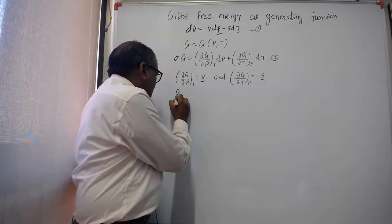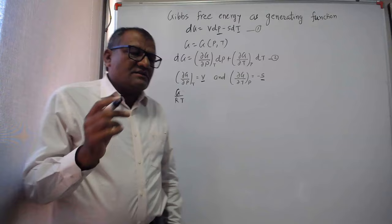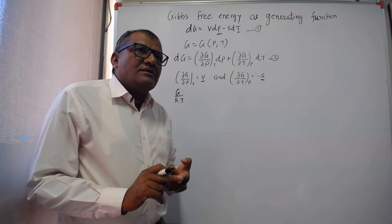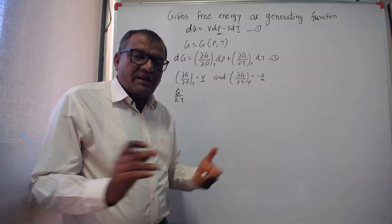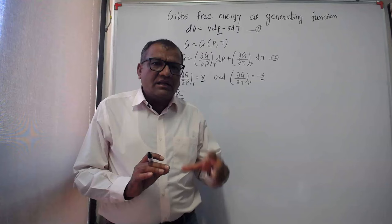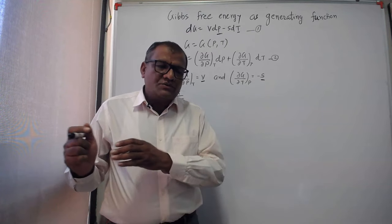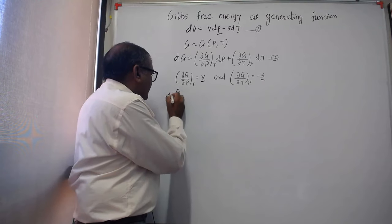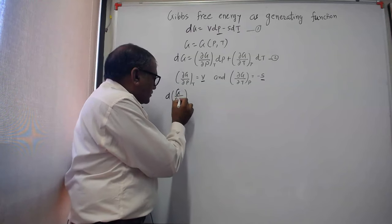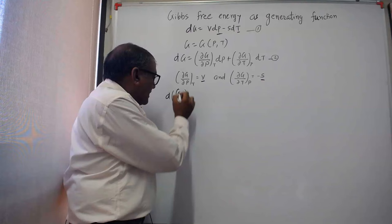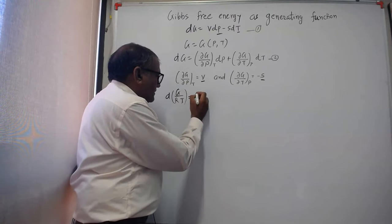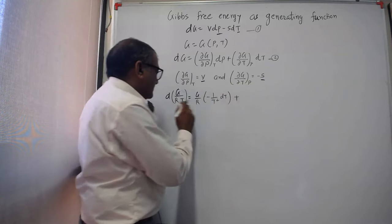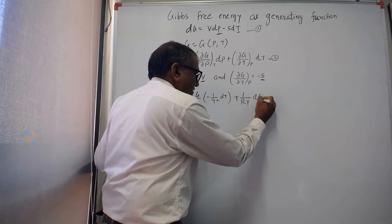I am going to write one dimensionless number, g/RT, because the unit of g is kilojoules per kilomole. If we divide by RT, it becomes dimensionless, and in chemical engineering we use many dimensionless numbers — it makes calculations easier. So instead of using properties with units, we can use dimensionless numbers. I am going to use g/RT. If I take the differentiation of g/RT, with two variables g and T, taking g/R as constant gives −(1/T²)dT, and with 1/RT constant it gives dg.